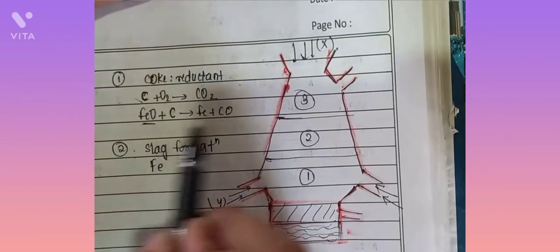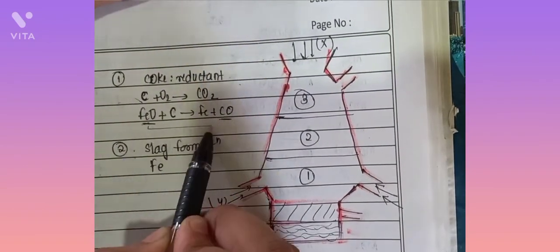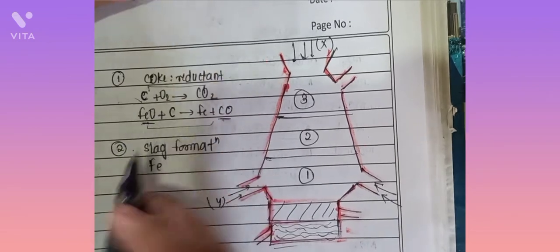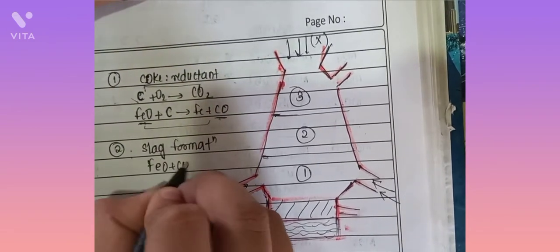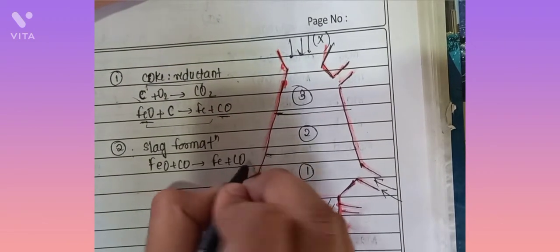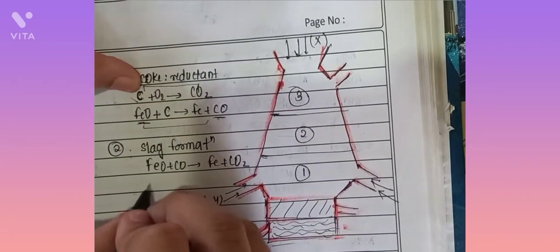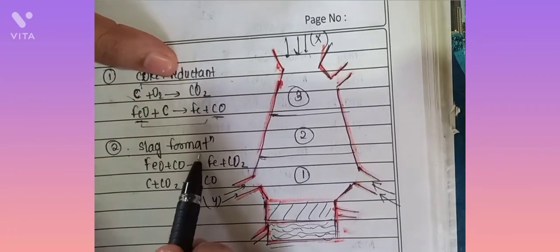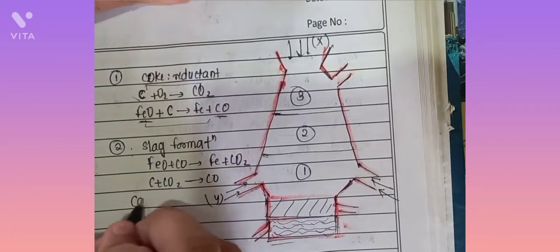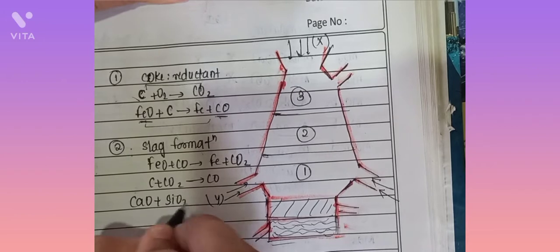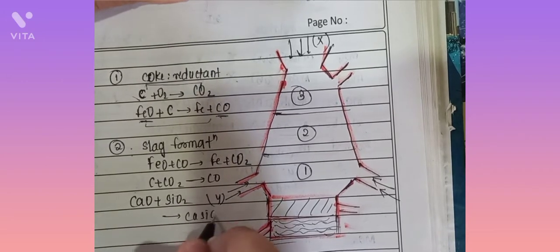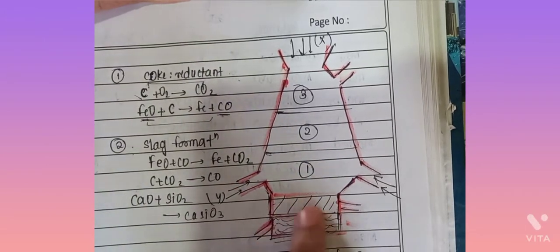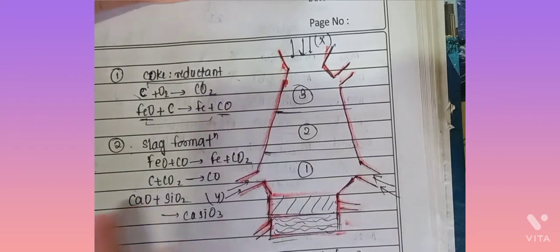In the second process, FeO reacts with CO to form Fe plus CO2, and carbon with carbon dioxide forms carbon monoxide. Here slag is formed. CaO with silica forms CaSiO3 which settles as slag and can be removed afterwards.